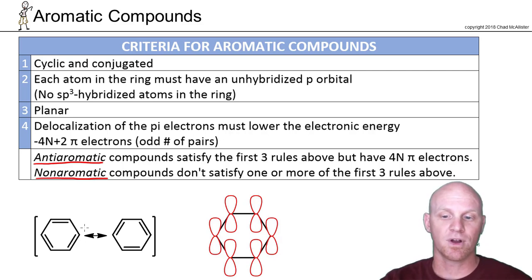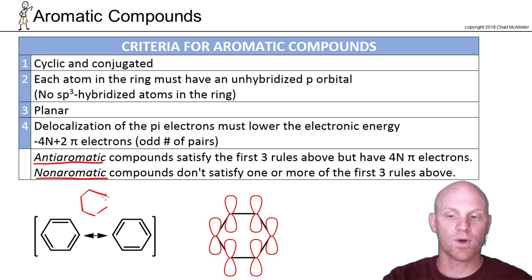But if you notice the two resonance structures, there are no double bonds in benzene. Kind of they're like the equivalent of like one and a half bonds. But you've got delocalization all the way around the ring here. So it's not like you have three short bonds and three long bonds, three double bonds and three single bonds. You've got delocalization all the way around.